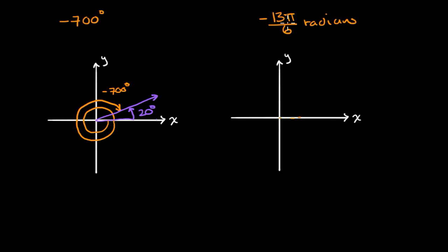This would involve, let's see, 12 pi over six would be going twice around. So let's see, if we go, this would be negative two pi. Well, actually, nevermind. So what I just drew so far is negative two pi, which is 12 pi over six.